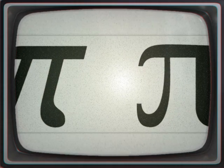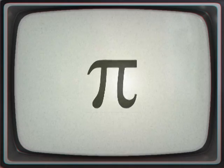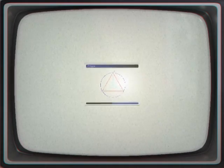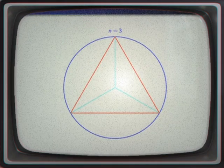In the 20th and 21st centuries, mathematicians and computer scientists discovered new approaches that, when combined with increasing computational power, extended the decimal representation of pi to, as of late 2011, over 10 trillion digits.